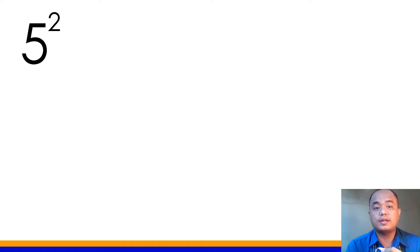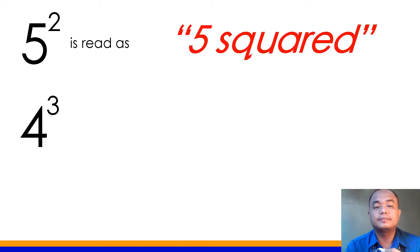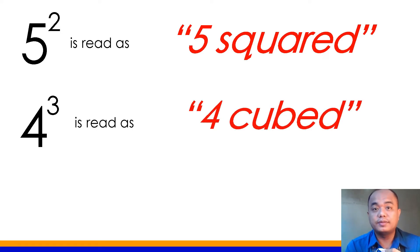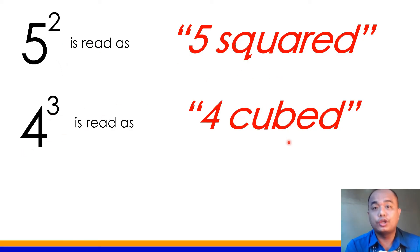Now, what if you are given a number like this one? How do you read this? That is read as 5 squared. And how about this one? This is read as 4 cubed. Take note: when 2 and 3 are used as exponents, they are read as their special names. For 2, that's squared, and for 3, that is cubed.